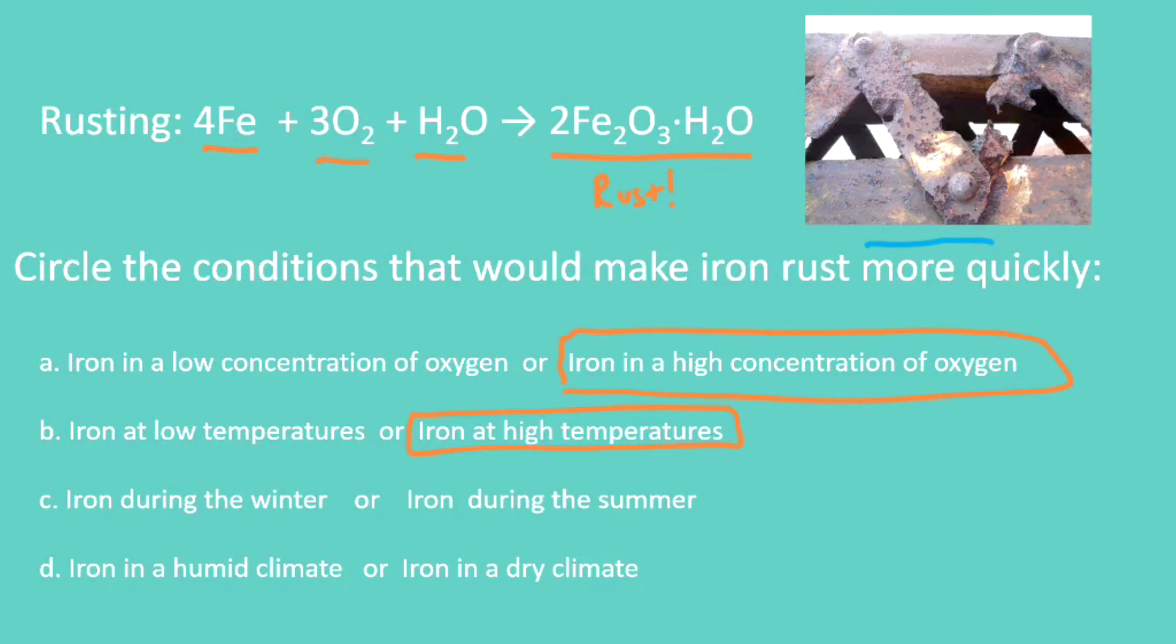Now we start to get into some applications, thinking about circumstances that will change either temperature or concentration. Which will rust faster: iron during the winter or iron during the summer? Well, during the summer, we have higher temperatures. We also typically have higher humidity, that is more moisture in the air. So both the increased temperature and the increased concentration of oxygen are going to mean that iron rusts more quickly in the summer.